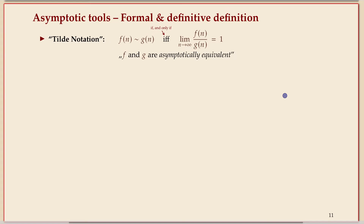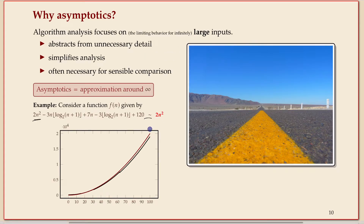Let me formally define what asymptotics is for us. I'll start with the simplest version: the tilde notation. f and g are asymptotically equivalent, written f ~ g, if when you take f divided by g and compute the limit as n goes to infinity, the limit is one. These two functions are treated as asymptotically equivalent because they give the same value for large n.